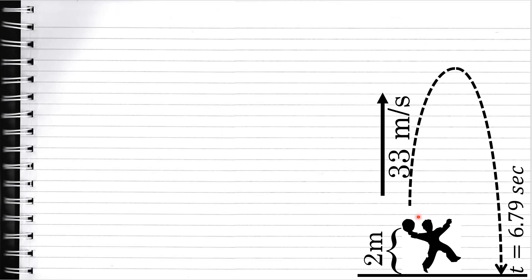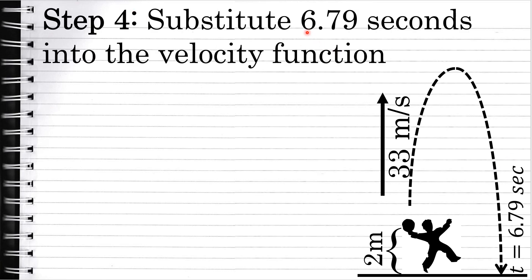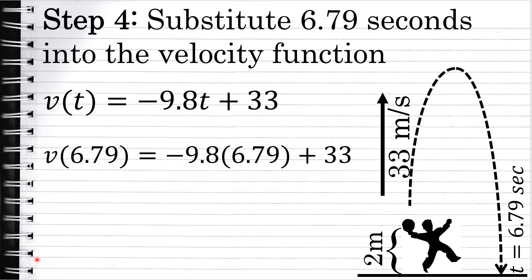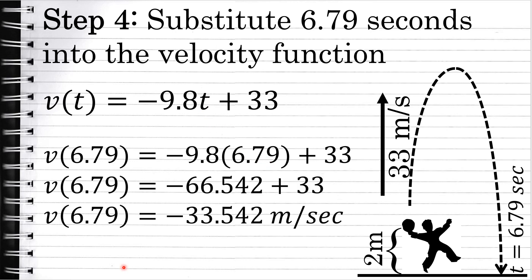We're not concerned with how fast the ball is going after 2 seconds. We want to know how fast the ball is going when it hits the ground after 6.79 seconds. Therefore, step 4 is to substitute 6.79 seconds into the velocity function — this will tell us how fast the ball is going when it hits the ground, answering the original question. Evaluating v of 6.79, substituting 6.79 for t, yields a value of negative 33.542 meters per second, at least to the nearest thousandth.